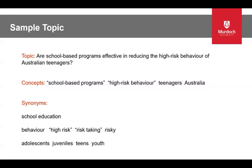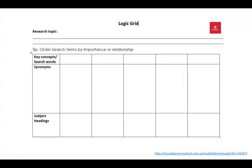Once you have worked out the concepts, you need to identify keywords and synonyms you can use to search for these. For school-based programs, synonyms are school and education. For high-risk behaviour, synonyms could be high-risk, risk-taking, or risky. For teenagers, alternative terms are adolescents, juveniles, teens, and youth. This is a logic grid, which can be really useful in assisting you in defining and keeping a record of your topic. In the grid you can write out your research topic, then list your concepts across the top, list synonyms or alternative words below each concept, and there is also space for writing subject headings if you decide to use controlled language.